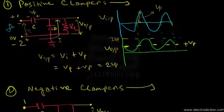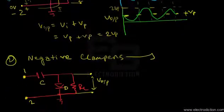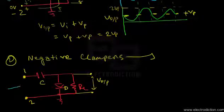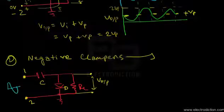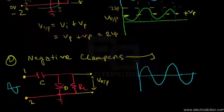Notice the two circuits: in the positive clamper the diode was connected with the anode to the ground, while in the negative clamper the diode is connected with its cathode to the ground. The way in which the diodes are connected in these two types of clampers are just the reverse of each other. Keeping that in mind, let's assume an input AC signal applied at the inputs to this circuit — a sinusoidal wave — and in green we represent the output graph.